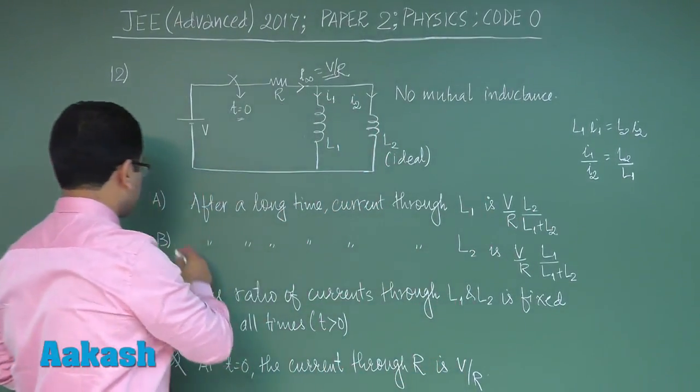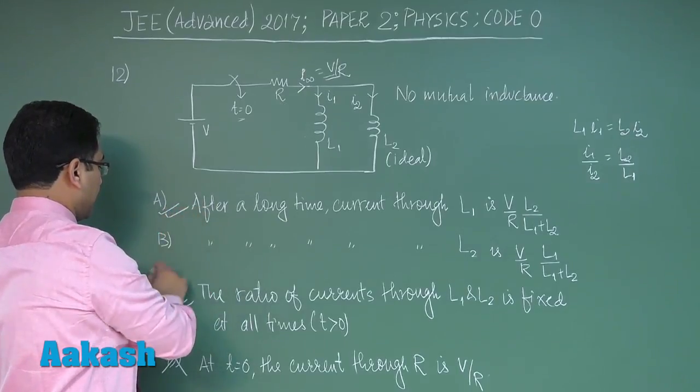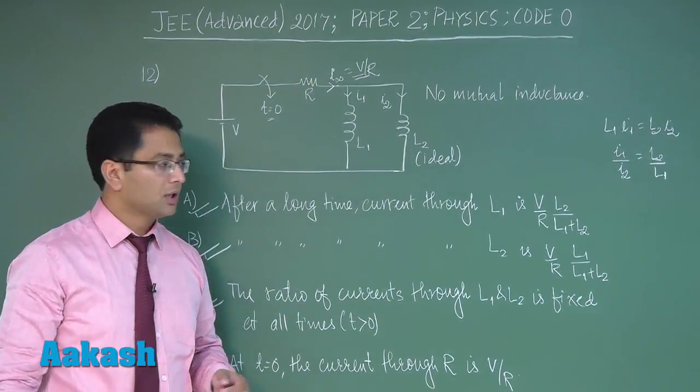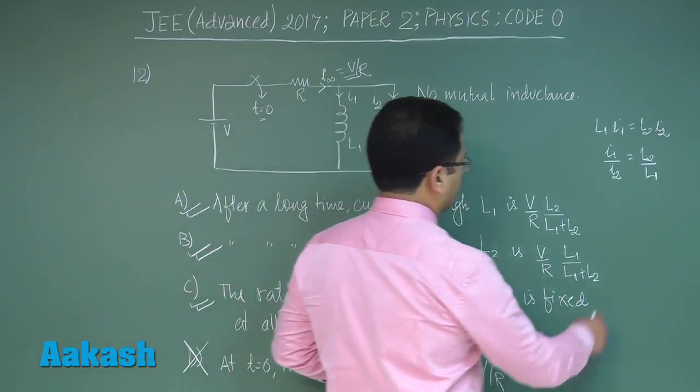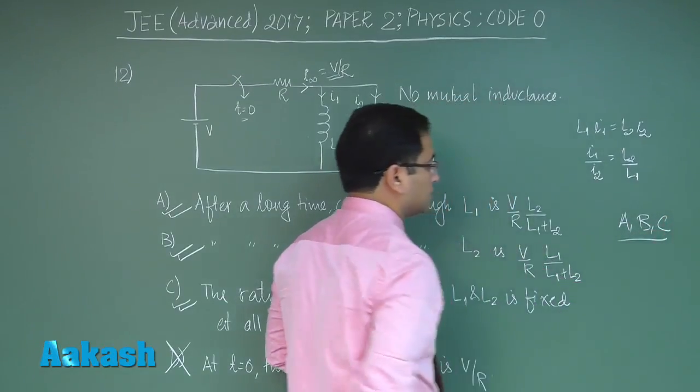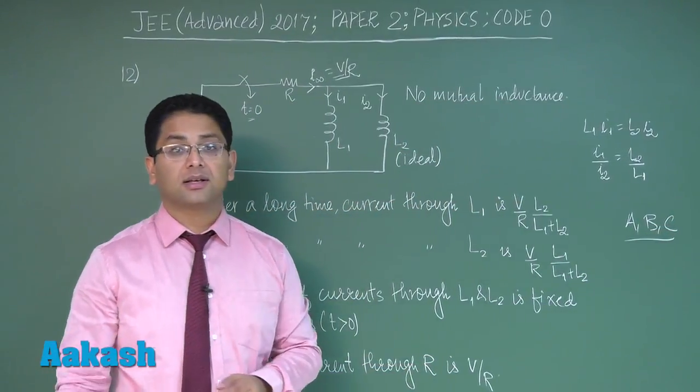So straightforward calculation will give us option number A and option number B both as the correct answer. So total correct options for question number 12 would be A, B and C. Time to move on for question number 13.